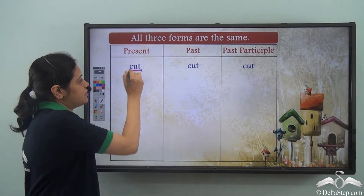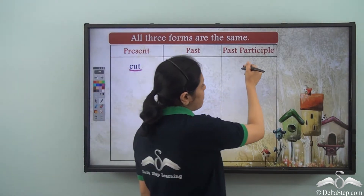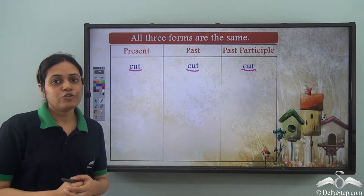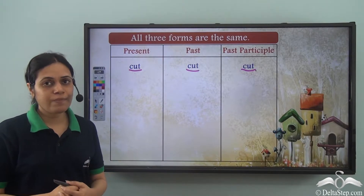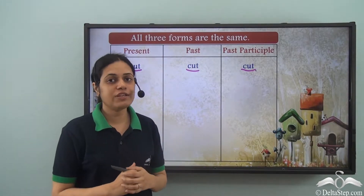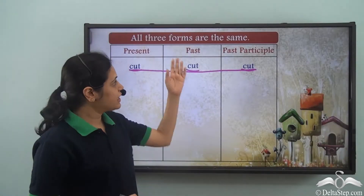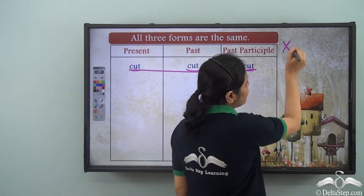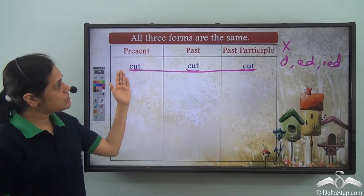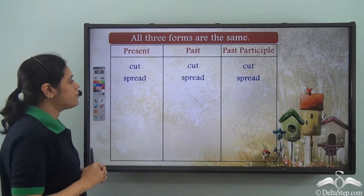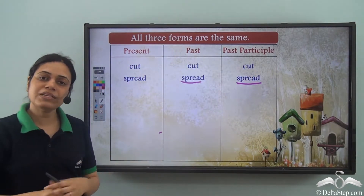If you look at the verb 'cut', the present form is cut, the past form is also cut, and the past participle form is also cut. 'I cut with a knife.' 'I cut an apple yesterday' — past form. 'I have cut all the vegetables' — past participle form. So all three forms are the same. Another such verb is 'spread' — the past form is spread and the past participle form is spread.